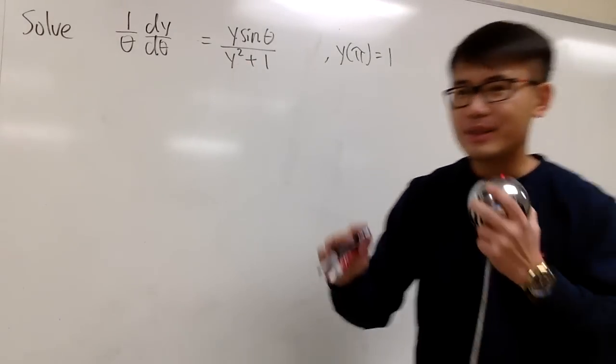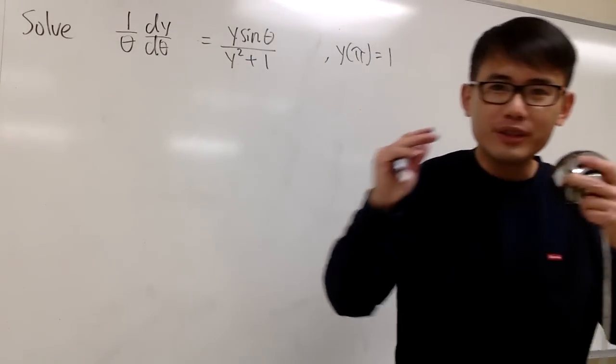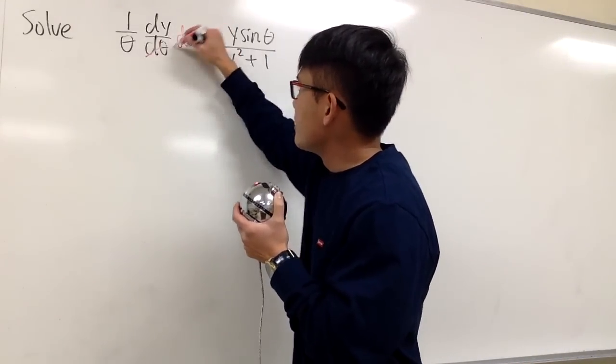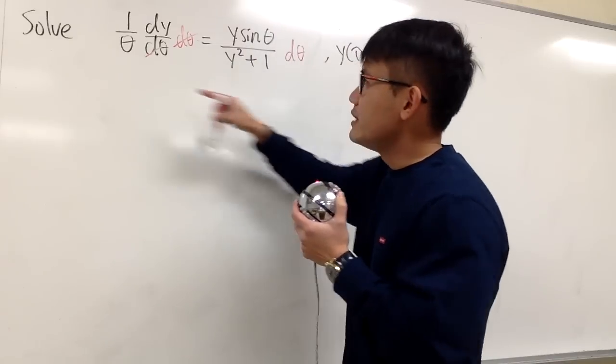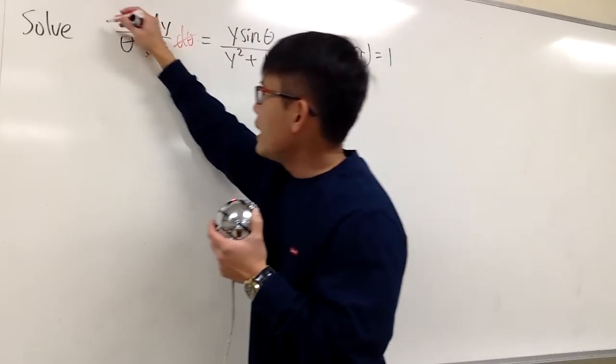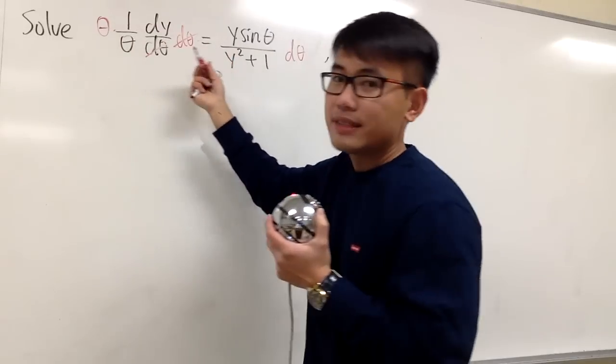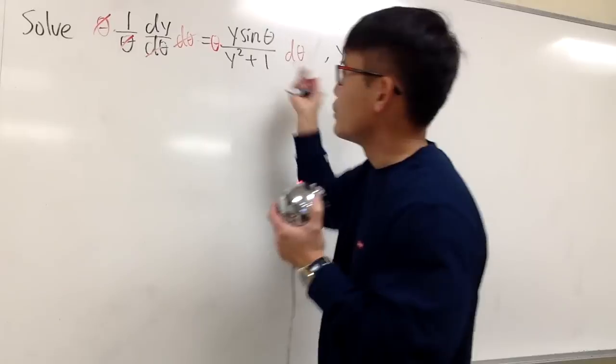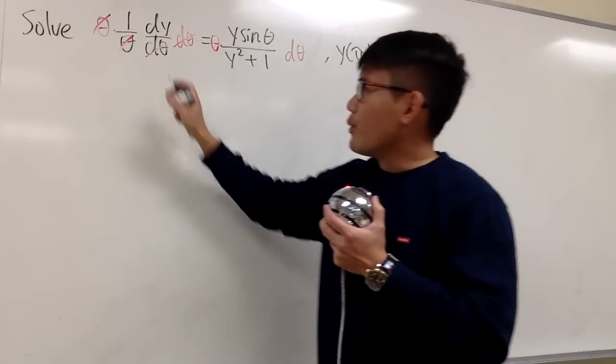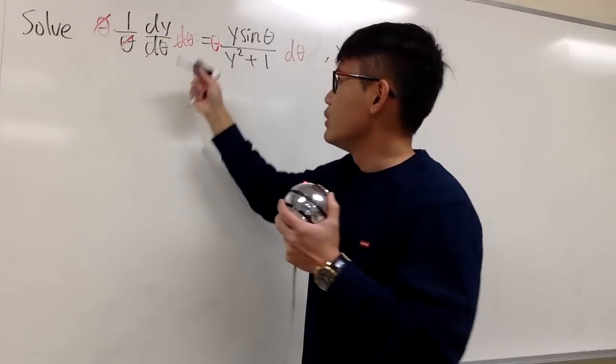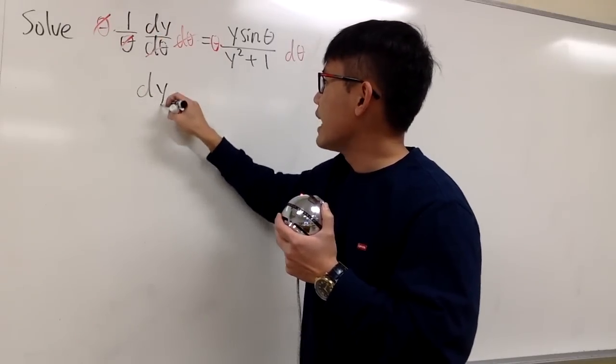Let's go ahead and move all the y's together and move all the thetas together. Let's take care of the theta first. Let's first multiply dθ on both sides. And you see, we also have another theta in the denominator on the left-hand side. Let's multiply theta on both sides as well, so that they cancel. So on the left-hand side, we just have 1 times dy. All in all, it's just dy by itself on the left-hand side.